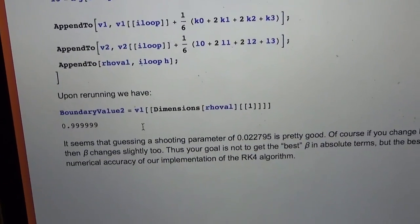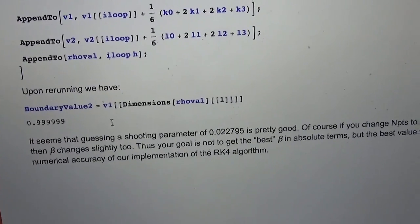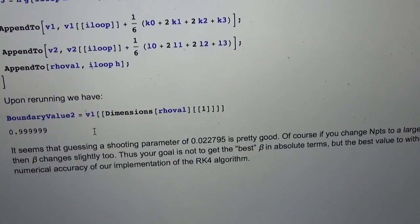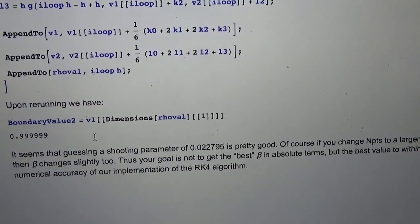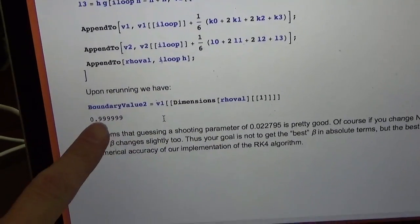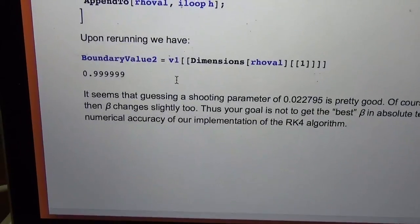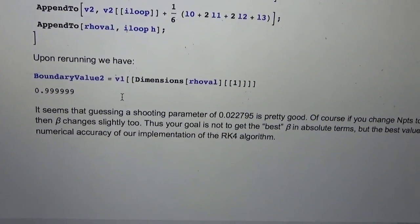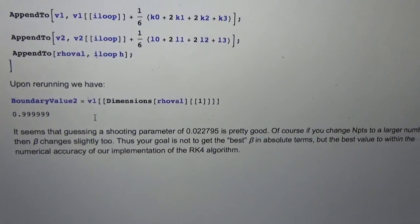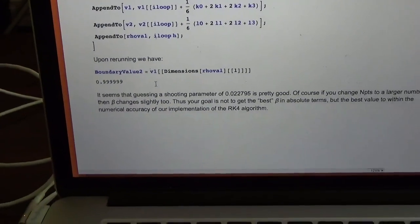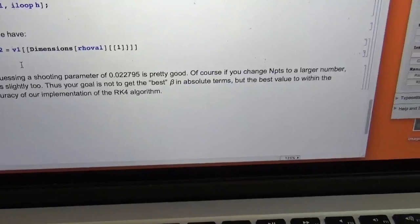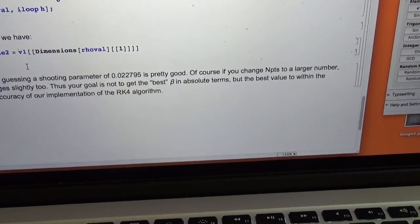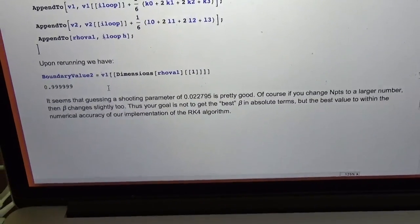Ultimately, we need to decide how accurate we need the solution, and then we pick both the number of Runge-Kutta steps and the step size and the beta value so that they are matched. We don't really need the beta value accurate out to 12 decimal places when the Runge-Kutta is carrying with it a 0.01% error. Anyhow, so we'll have those matched.